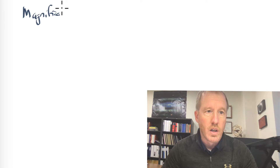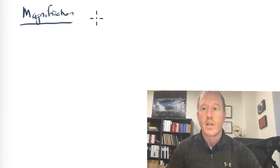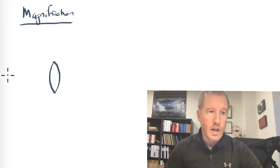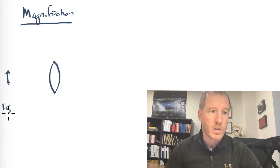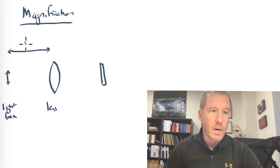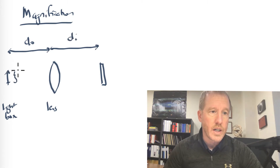So for the magnification section, what you're doing is you're going to be looking at the data that you collected for your thin lens equation, where you had the lens and then you had your light box with the arrow pointing like this. This was your light box, this was your lens, and this was your screen over here. Then you measured the object distance and you measured the image distance. You also should have measured the height of your object and the height of the image that was projected on the screen. This is the height of the image.